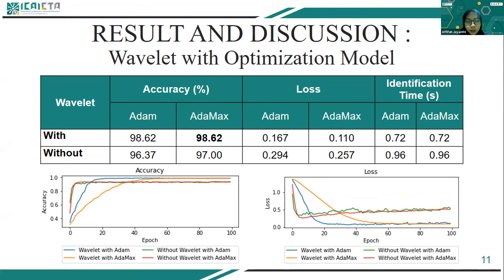The second experiment tests the use of wavelets. The model with wavelets achieved higher accuracy than without wavelets, though the difference is not significant. This result shows that channel handling in identification using CNN and RNN is more dominant in improving performance, so wavelet extraction only slightly increases accuracy. However, wavelets are still recommended because they focus on extracting the required frequency range to help improve performance.